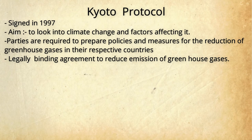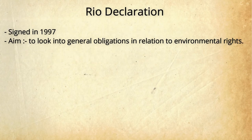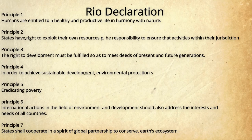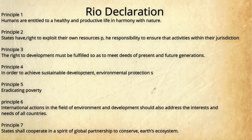The Rio Declaration focused on rights and obligations in relation to environmental rights and had 27 guiding principles. The first principle addresses sustainable development and the right of people to live a healthy and productive life. The second states that nations have the right to exploit their own resources, but this should not damage the environment. The third looks at the right to development in a manner that is preserved for future generations. The fourth addresses sustainable development as an integral part of development processes.